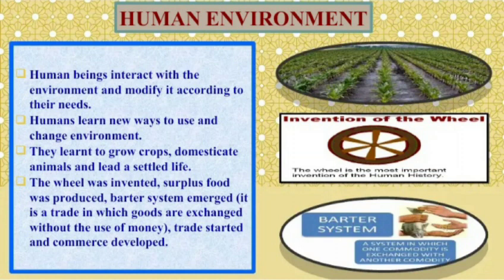Human beings interact with the environment and modify it according to their needs. Humans learned new ways to use and change the environment — they learned to grow crops, domesticate animals, and lead a settled life. The wheel was invented, surplus food was produced, and water systems emerged. Trade developed in which goods were exchanged, and commerce developed.